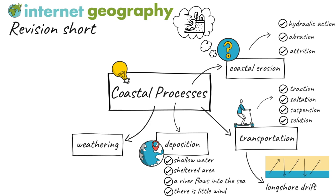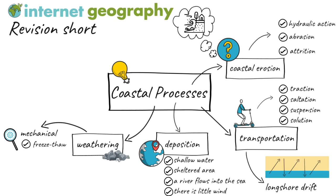Weathering is the breakdown of rocks in situ. Mechanical weathering is the breakdown of rock without changing its chemical composition, meaning the rock breaks up without its chemical makeup changing. Freeze-thaw weathering is the main type of mechanical weathering that affects coasts. It occurs when rocks are porous — containing holes — or permeable, allowing water to pass through. Water enters the rock and freezes, and the ice expands by around 9%, causing pressure on the rock until it cracks.